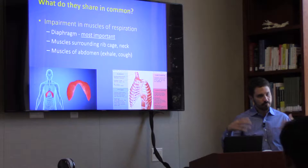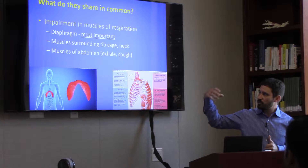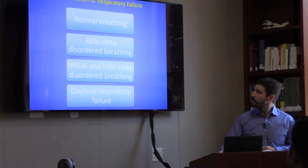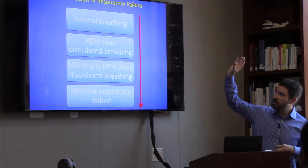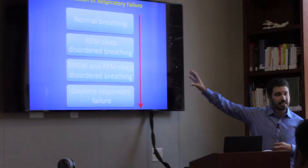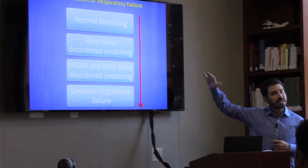The diaphragm is one of our most important muscles when it comes to breathing, because if it becomes weak, we have to think about ways to augment or help people breathe. Once these muscles start getting weak, we also start worrying about poor cough and that sort of thing. The evolution of breathing problems in neuromuscular disease follows this sort of pattern: folks will start out with normal breathing, then have breathing trouble in REM sleep or dream sleep, then REM and non-REM sleep, and then it'll progress to the daytime.